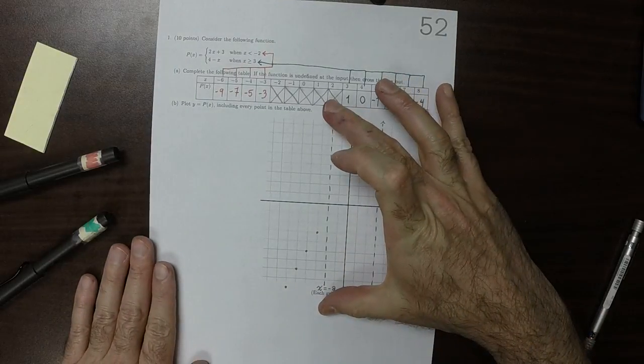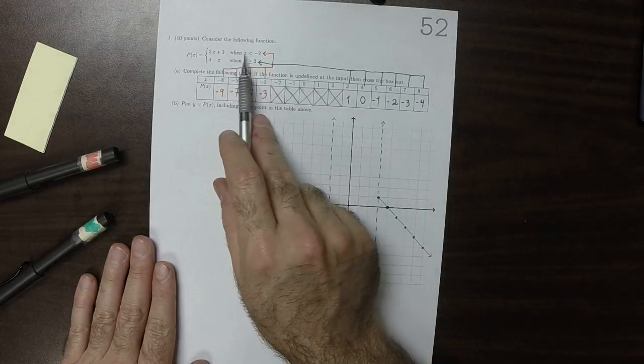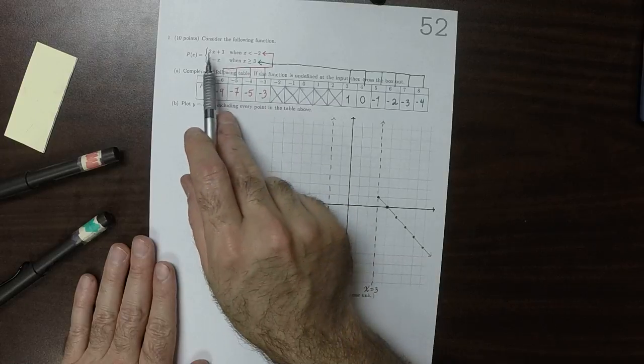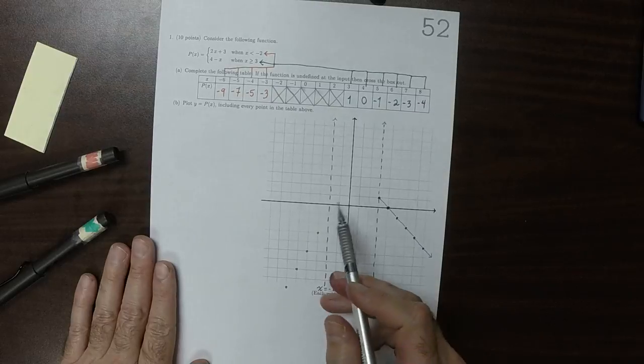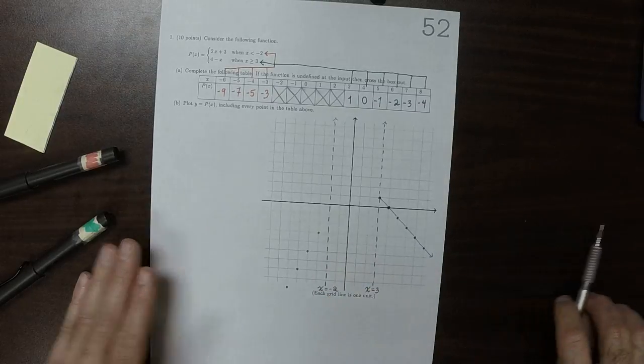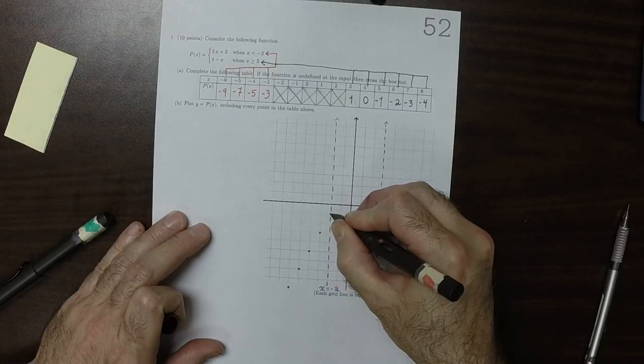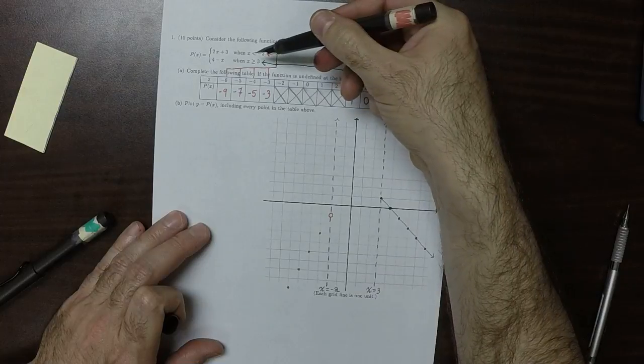So notice that the red definition, the first definition is still defined for, say, x is negative 2 and a half. So it's still defined here, which means that we need to extend this line up to that point, but not including it because it says strictly less than.